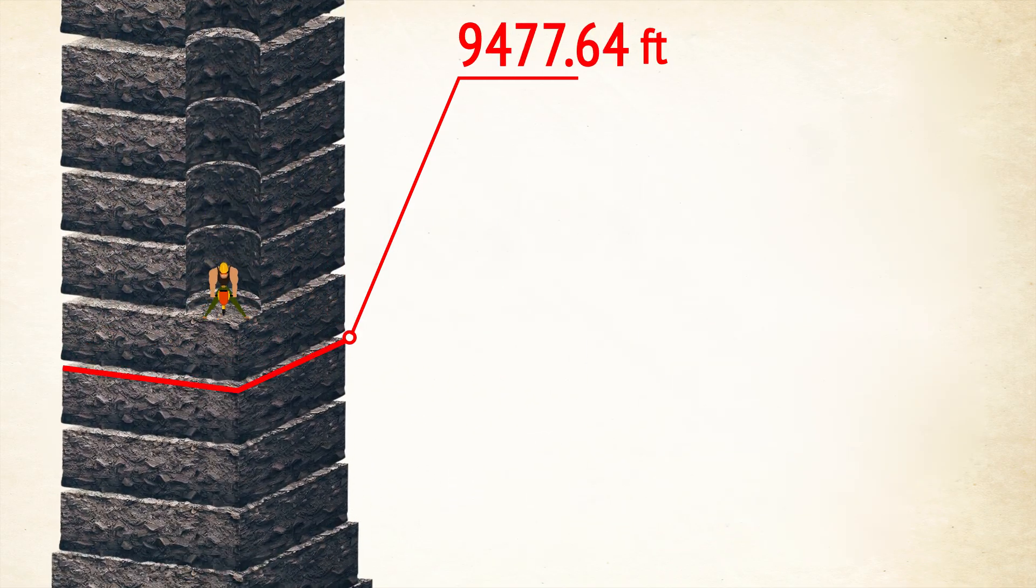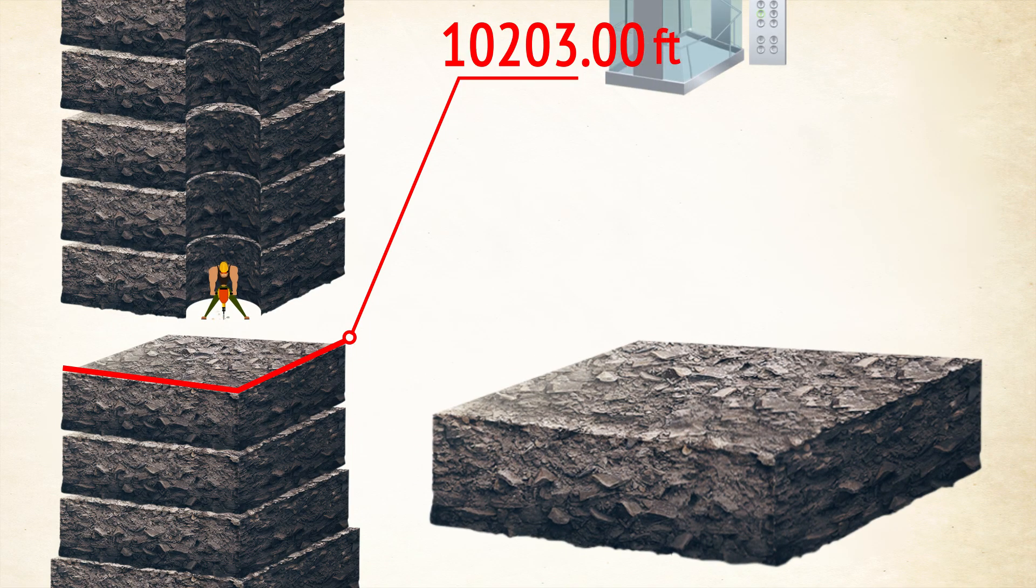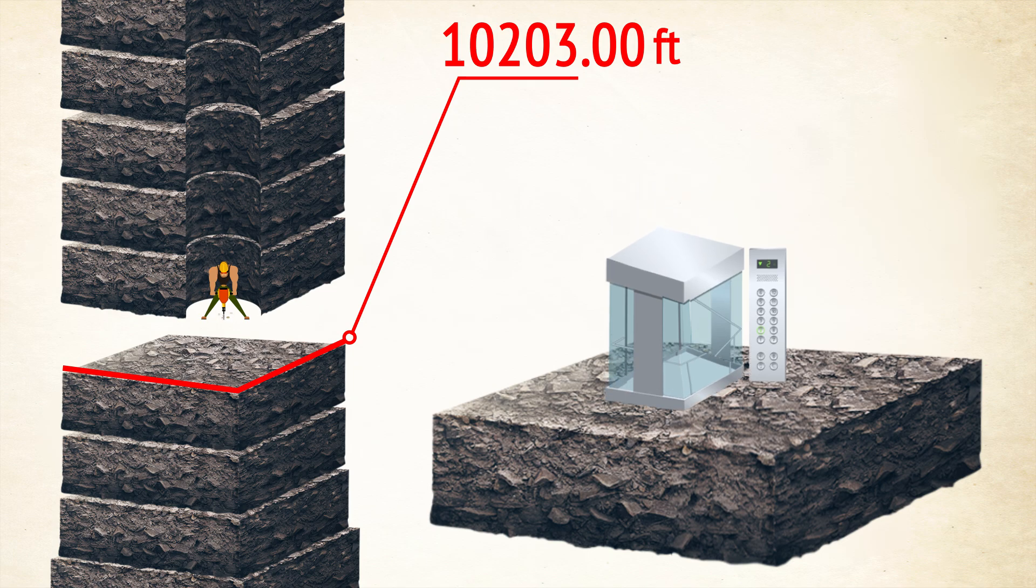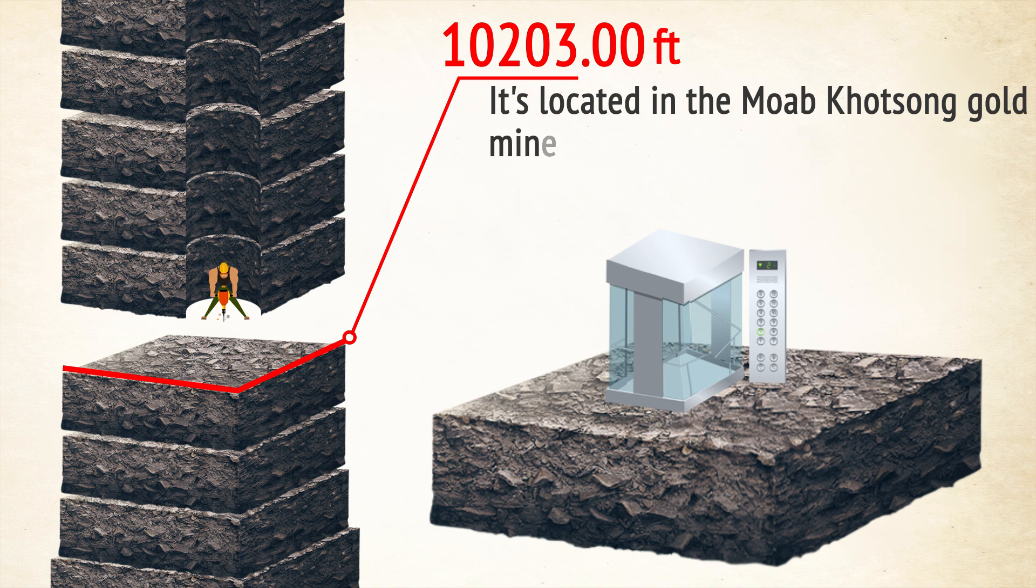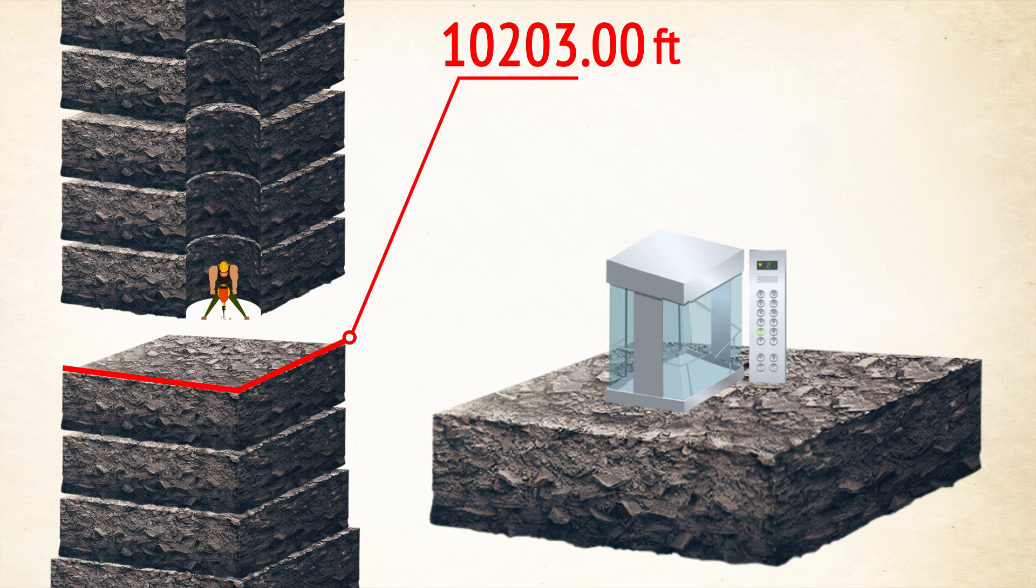Let's dig a bit deeper. 10,203 feet down and we see the deepest single-shaft elevator in the world. It's located in the Mponeng gold mine in South Africa. If you decide to take the elevator down, it will take you 4 and a half minutes. But if you opt for a shortcut and jump into the shaft, you'll reach the bottom in just 25 seconds.